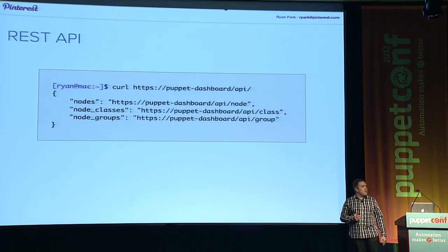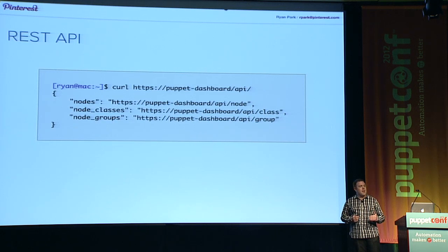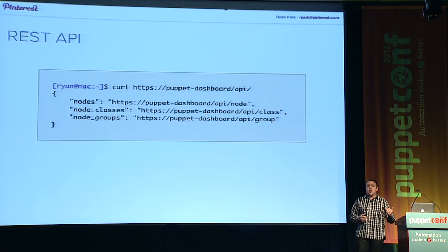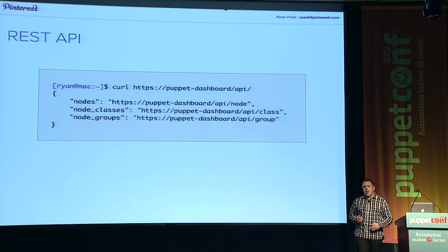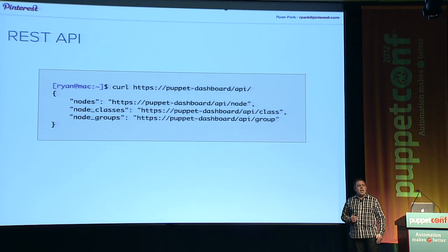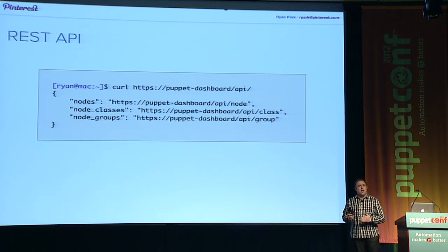Puppet Labs recently released PuppetDB, which is another open source product that also has a REST API for interacting with stored configs data. This may be more useful to some of you because it's a lot more generic and should apply to most any Puppet environment. But we've found that tying both the Dashboard and the stored configs together allows us to get a combination logical and physical view, whereas PuppetDB is more an interface for physical data like from your stored configs or the last catalog run.